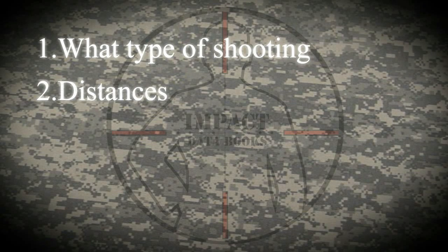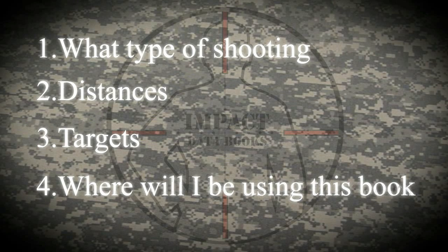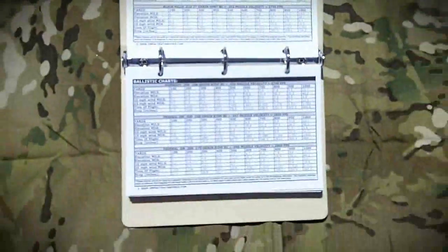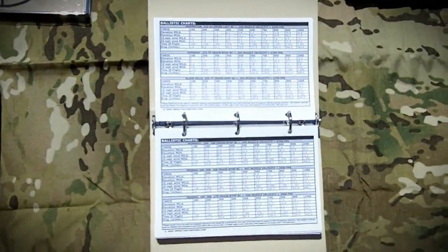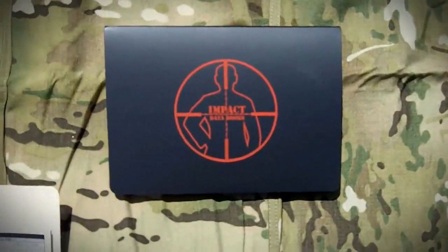The first thing you should ask yourself is: what type of shooting do I plan to do? At what distances will I be shooting? What type of targets do I have to shoot at? Where will I be using this book? By answering these questions you can quickly lay out and design a book by choosing the pages that correspond with your shooting needs from the wide variety of target pages we offer. All our pre-made spiral and modular books come with the same index reference material, so you need to determine if you have specific needs to configure your book around.